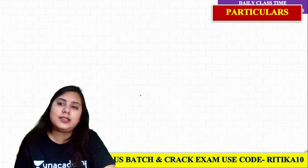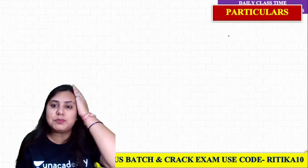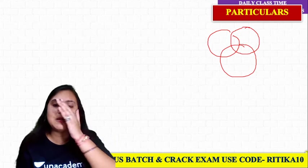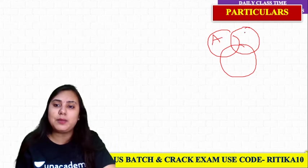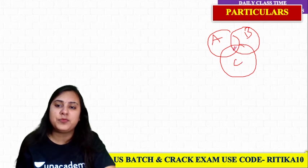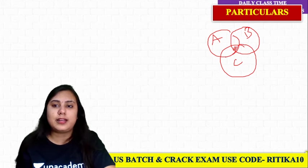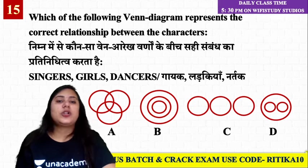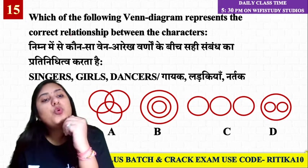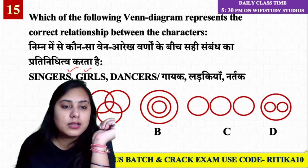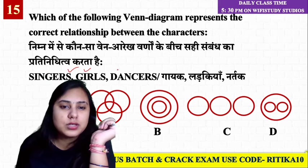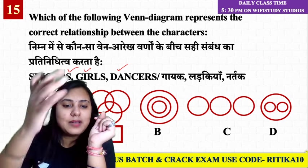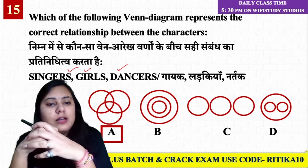The third category is Particulars. Particulars means there is a little or partial relationship between the three entities. If something A is in B or C, then there is a partial relationship. For example, Singers, Girls, and Dancers — there are some singers who are dancers, and some dancers who are singers. The answer should be the first option.